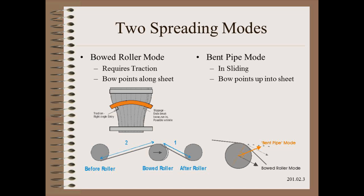This slide is a bit of review from our spreading module that will be necessary to follow the next slides. Recall that the bowed roller can operate in two modes: the bowed roller mode and the bent pipe mode. In film and paper, the intent is usually to use the bowed roller mode. Here, the bow is oriented along the path of the web. The mechanics are simple to describe — it is the good old normal entry law. The web edges bend outward to meet the curved axle at a right angle. However, in order for this law to operate, we must have traction.